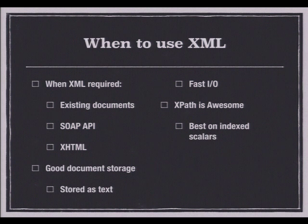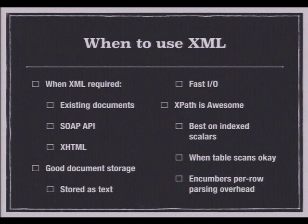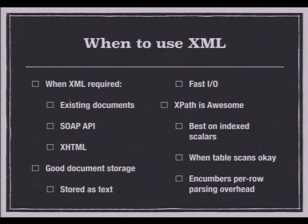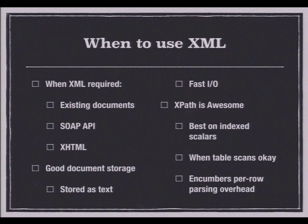Performance is best on indexed scalars. When doing table scans or iterating through large documents, we have per-row parsing overhead — each XML value you look at with your XPath query has to parse the XML to do the expression. If you have two XPath conditions, you're parsing the document twice. You can work around this to some degree with indexing values where you know in advance exactly what you're interested in.